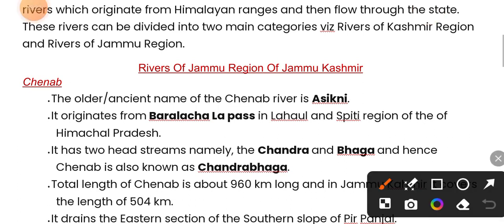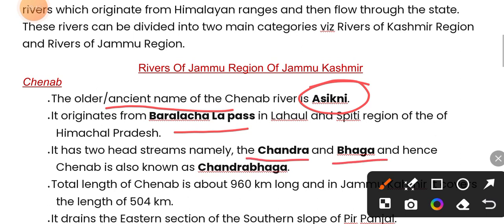The older ancient name of the Chenab river is Askini. It originates from the Baralacha La Pass in Lahaul. It has two head streams — Chandra and Bhaga — and Chenab is also known as Chandrabhaga.